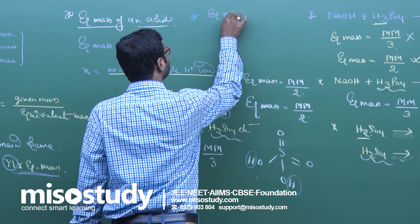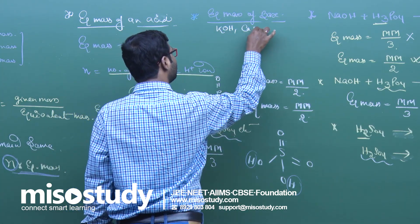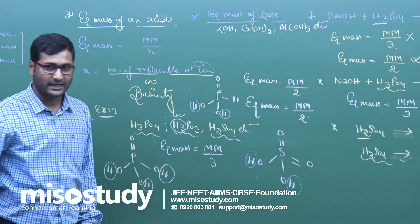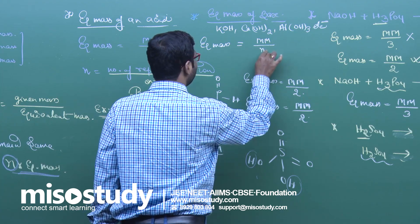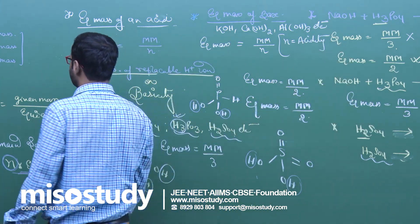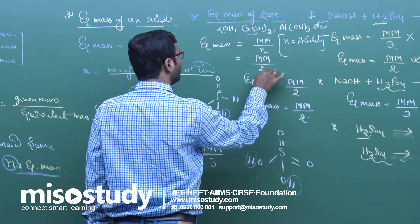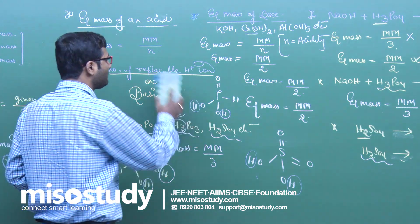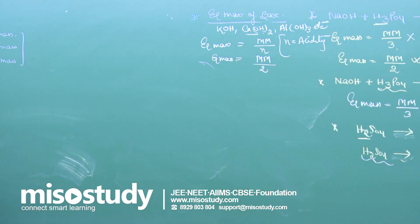For equivalent mass of a base — for example KOH, Ca(OH)₂, Al(OH)₃ — all contain hydroxyl ions. The formula is: equivalent mass of base = molecular mass / N, where N is the number of replaceable OH⁻ ions, also called acidity. For Ca(OH)₂, the equivalent mass = molecular mass / 2, since there are two replaceable hydroxyl ions. Questions from this topic are very common and it covers chapter 12: solution, mole concept, and volumetric analysis.